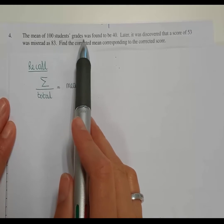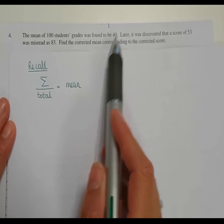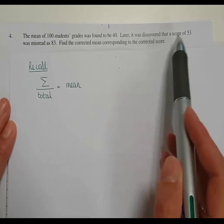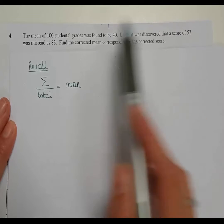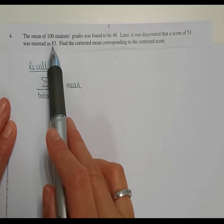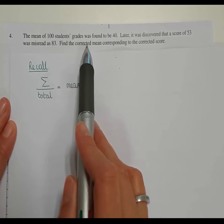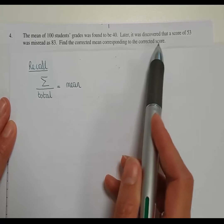The mean of 100 students' grades was found to be 40. Later it was discovered that the score of 53 was misread as 83. Find the corrected mean corresponding to the corrected score.